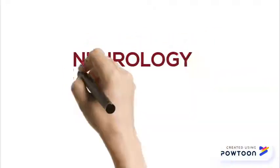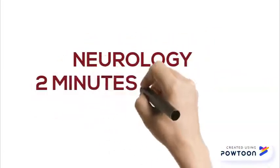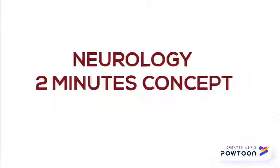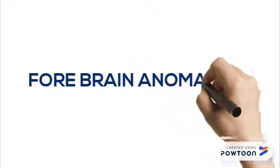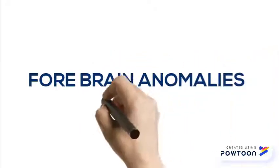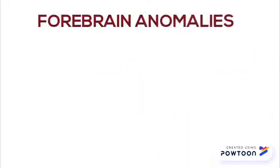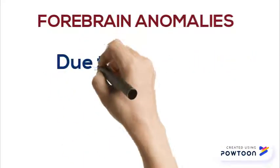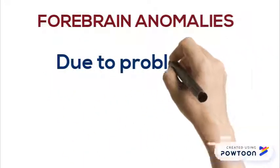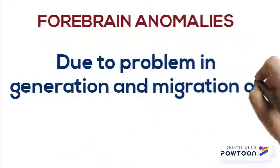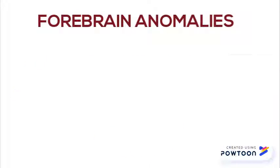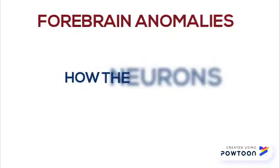Hello guys, welcome to Neurology Two Minutes Concept. Your topic today is forebrain anomalies. It is due to a problem in generation and migration of neurons. Before going into detail of forebrain anomaly, let's look at how neurons form.